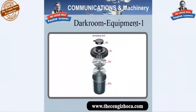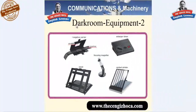Darkroom equipment one: a developing tank has a cap, a lid, two reels, and a tank. Darkroom equipment two: a negative carrier with a little window and the negatives inside, an enlarger timer, a focusing magnifier, a contact printer, and an easel.